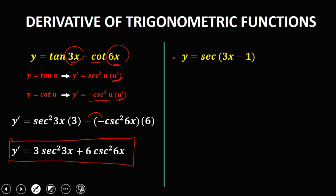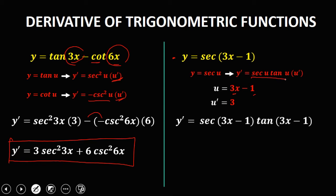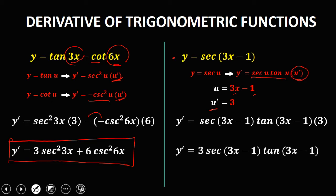For this given, the derivative of secant is secant u times tangent u times the derivative of u. Here u equals 3x minus 1. The derivative of 3x is 3 and the derivative of 1 is 0. So y prime equals secant(3x minus 1) times tangent(3x minus 1) times 3, which gives y prime equals 3 secant(3x minus 1) times tangent(3x minus 1).